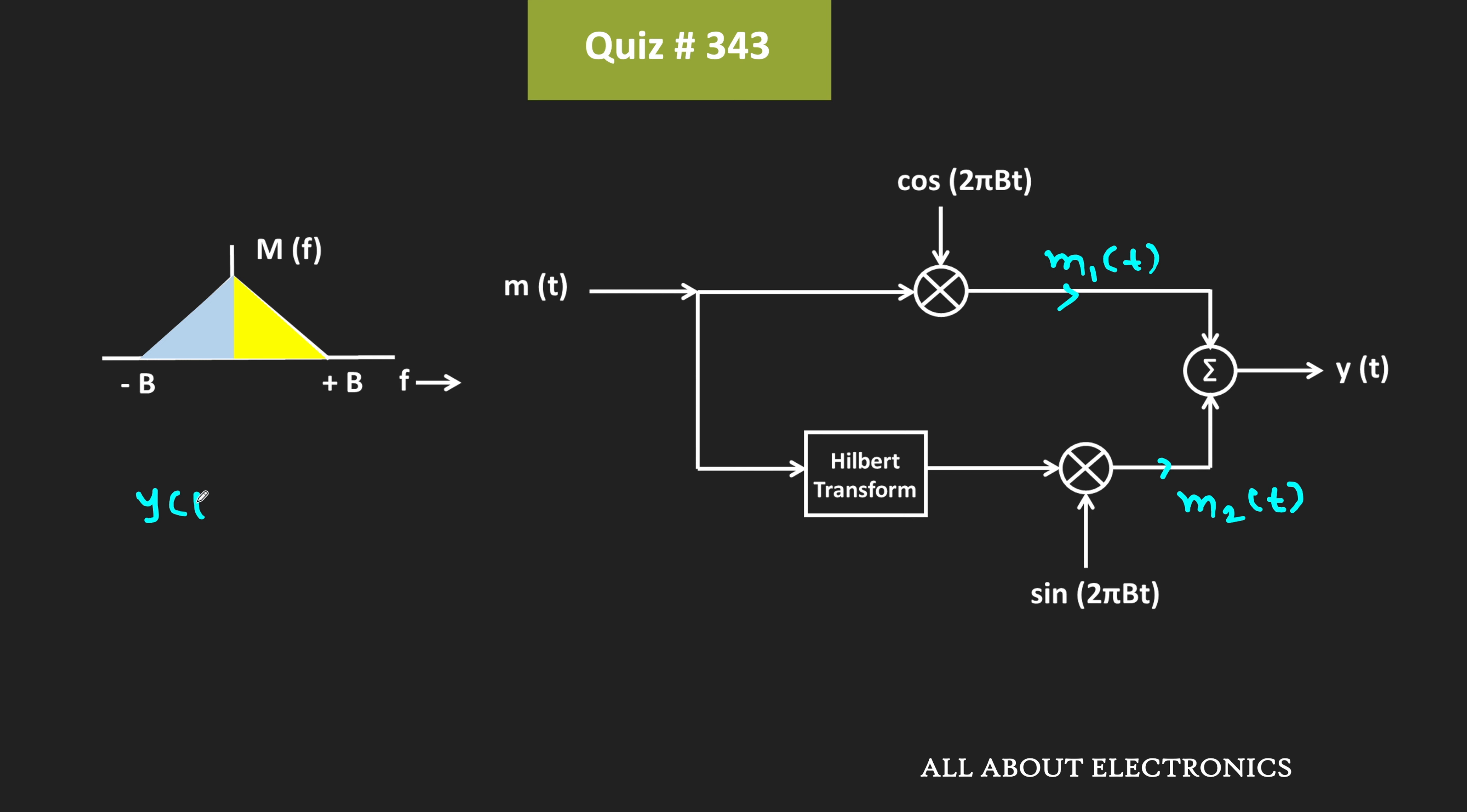So we can say that this signal YT is equal to M1T plus M2T. So this M1T is equal to MT times cos 2πBT. And let's say, the output of this Hilbert transform is equal to MHT where MHT is the Hilbert transform of this signal MT. That means this signal M2T is equal to MHT times sin 2πBT.